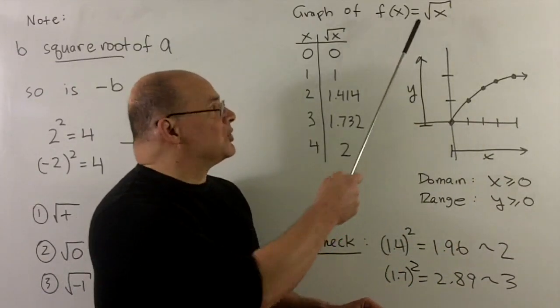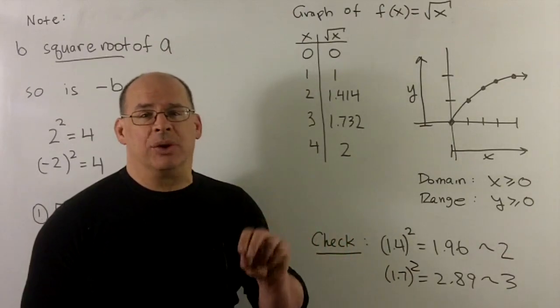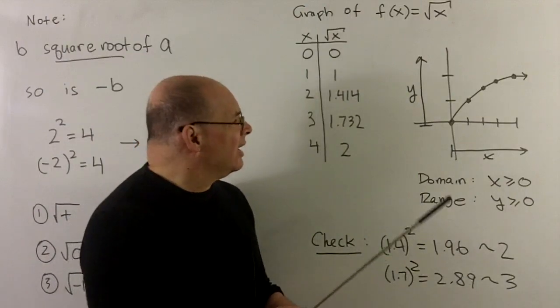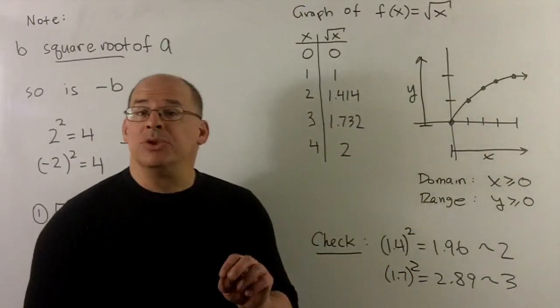And then for all the numbers that come out, here we're using the positive square root, so I can only get zero or positive numbers out. So that starts at zero and then goes all the way up. So, domain and range.